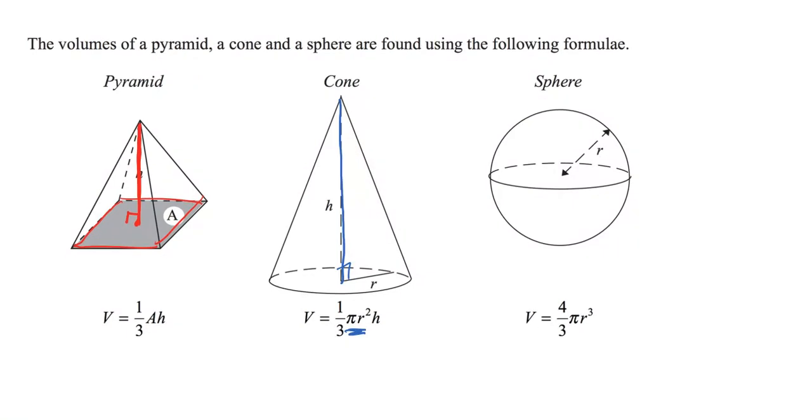And then the sphere, well, this is a bit different. We need to find - it's hard to draw this - but from the very center of the sphere to the outside is the radius of that sphere. And it's four over three times pi times r cubed.